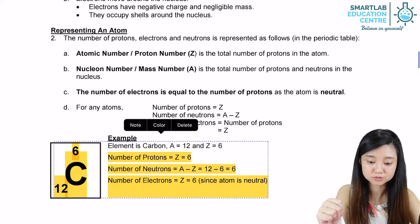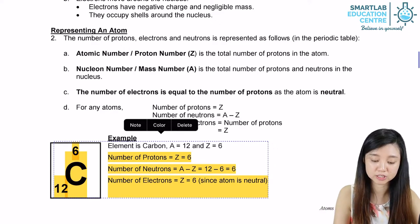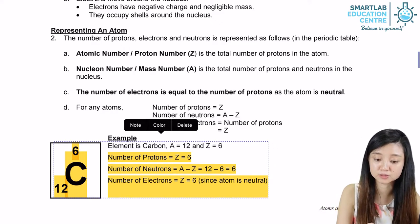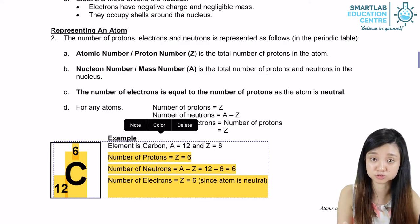Therefore, if you want to know what is the number of neutrons, we actually take the big number 12 minus the small number 6 to get the number of neutrons.